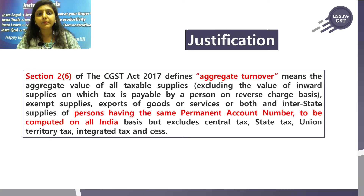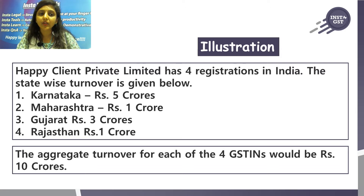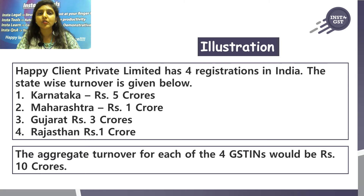That is why we need to consolidate the various turnovers of GSTINs under the same PAN. Consider this illustration: Happy Client Private Limited has four registrations in India. The state-wise turnover is Karnataka ₹5 crores, Maharashtra ₹1 crore, Gujarat ₹3 crores, and Rajasthan ₹1 crore. Summing all states gives ₹10 crores, so for each GSTIN the aggregate turnover is ₹10 crores.